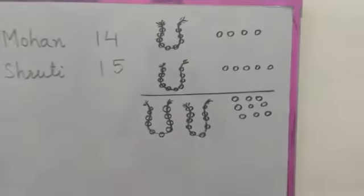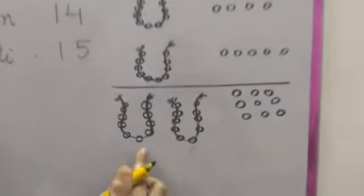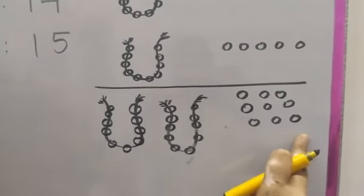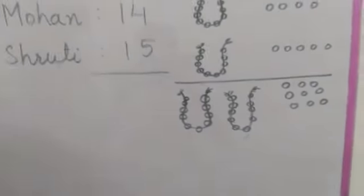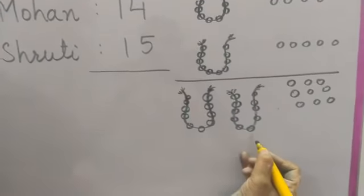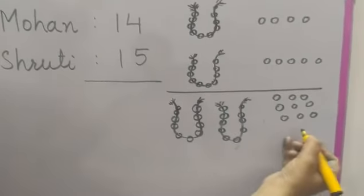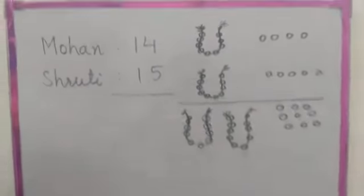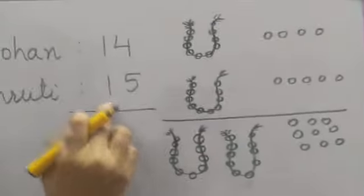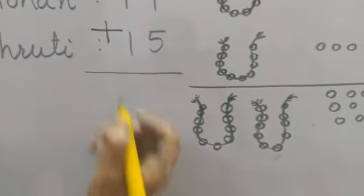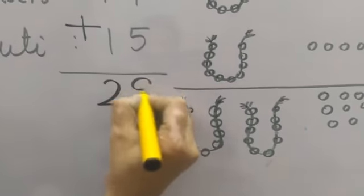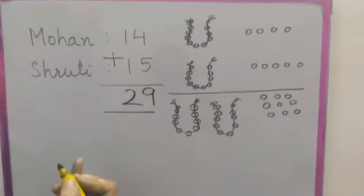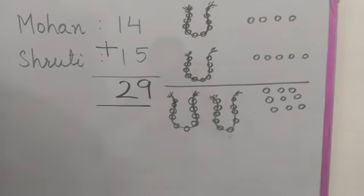So look, students — there are 2 necklaces of 10 beads and 9 loose beads. 2 tens and 9 ones. So we can say that 14 plus 15 equals 29. They have 29 beads altogether.